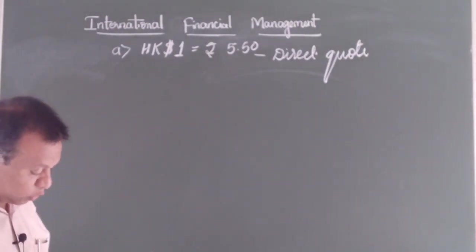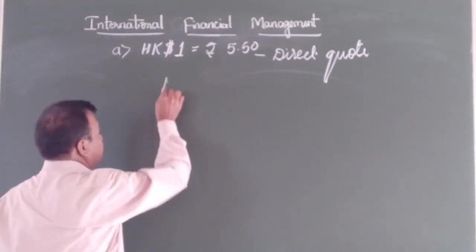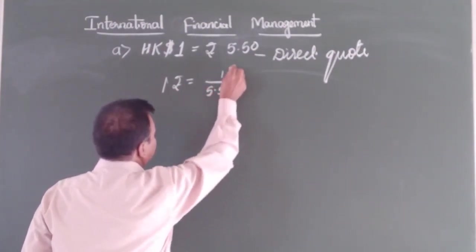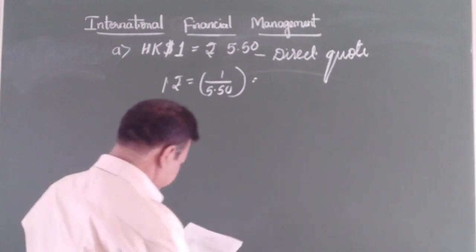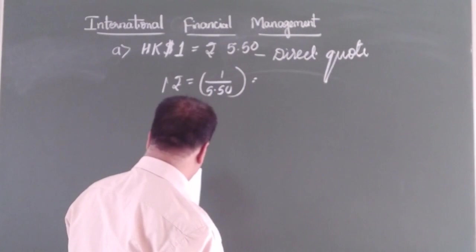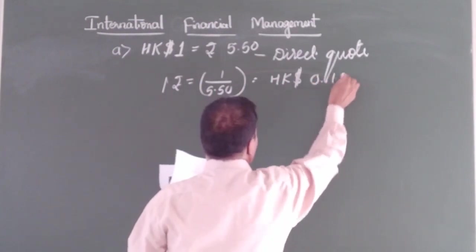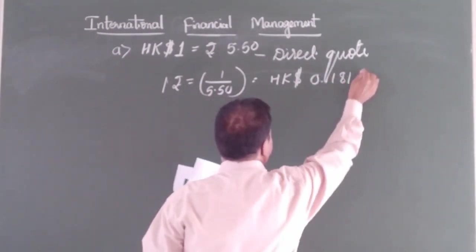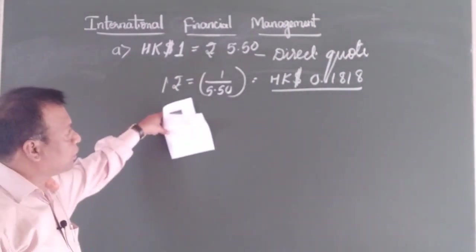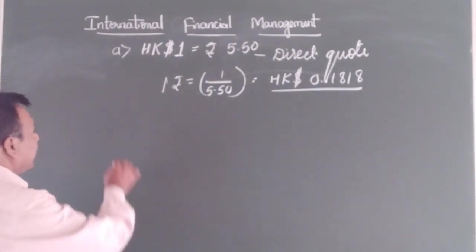Now, how do we write the corresponding indirect quote? If we express one unit of home currency equal to how many units of foreign currency, we call it an indirect quote. So here, if we divide 1 by 5.50, the answer we get is Hong Kong dollar 0.1818. This is the indirect quote — one rupee, or one unit of home currency, equals how many units of foreign currency.